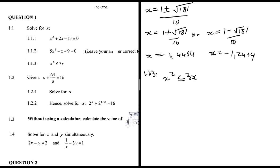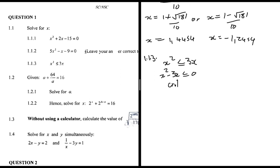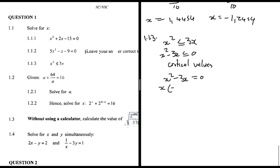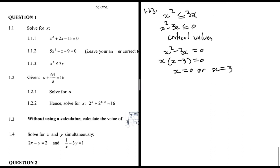I subtract 3x from both sides to get x² - 3x ≤ 0. To find critical values, I set x² - 3x = 0. Pulling out x gives x(x - 3) = 0, so the critical values are x = 0 or x = 3.